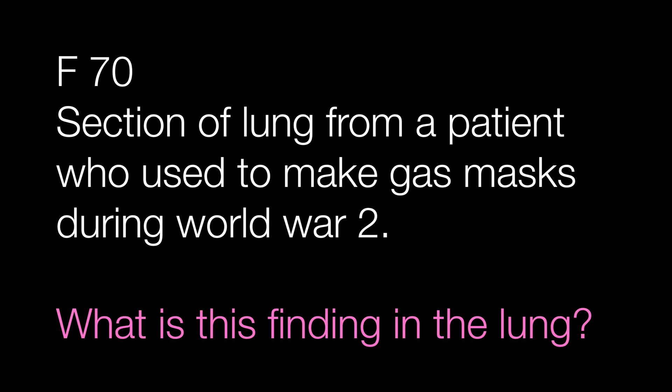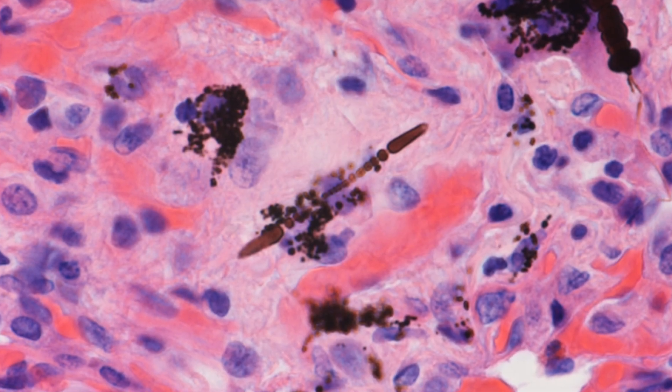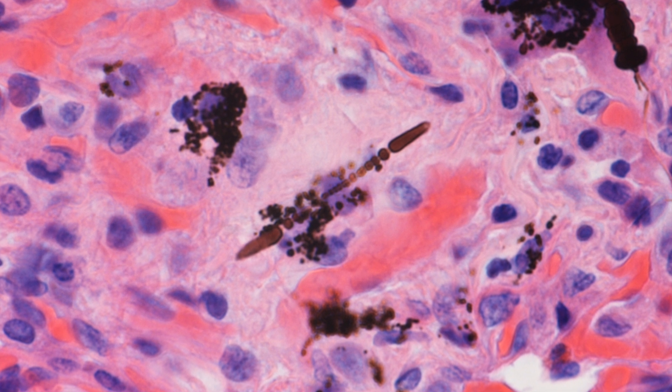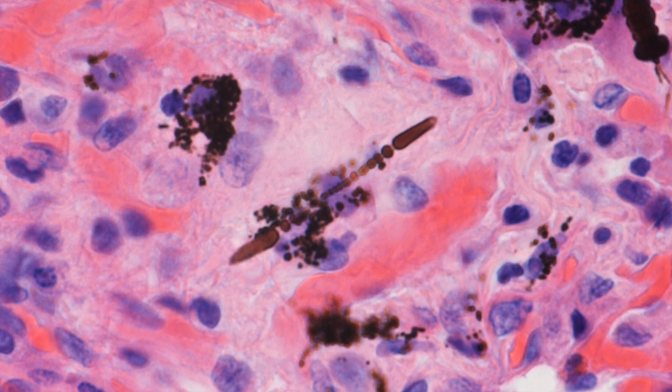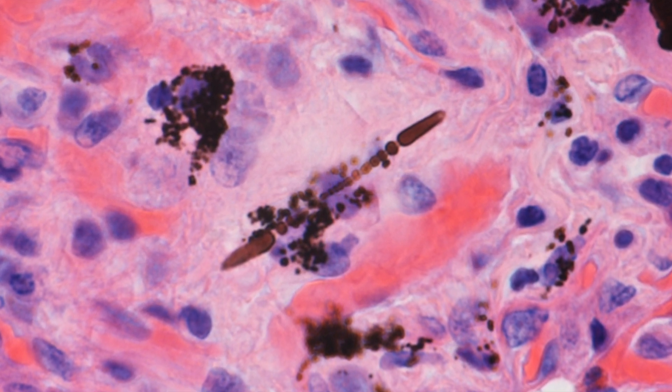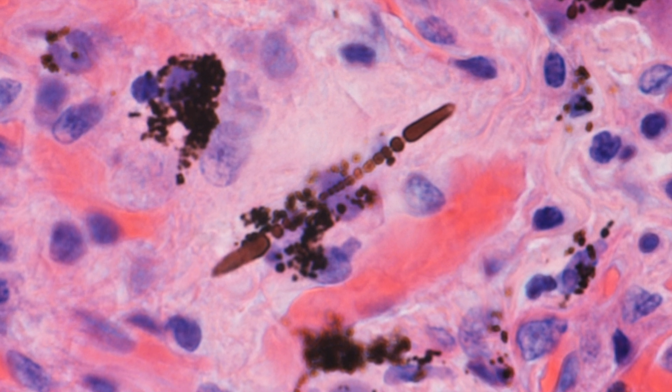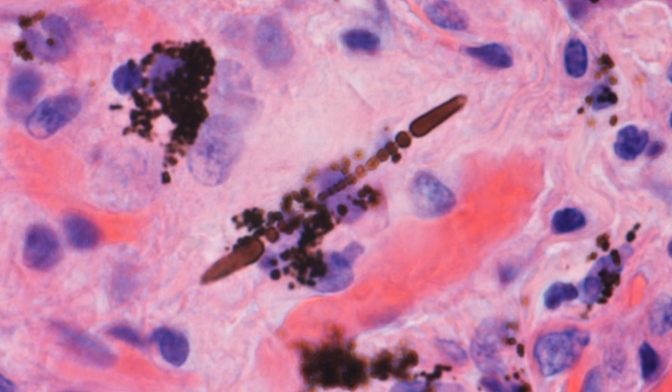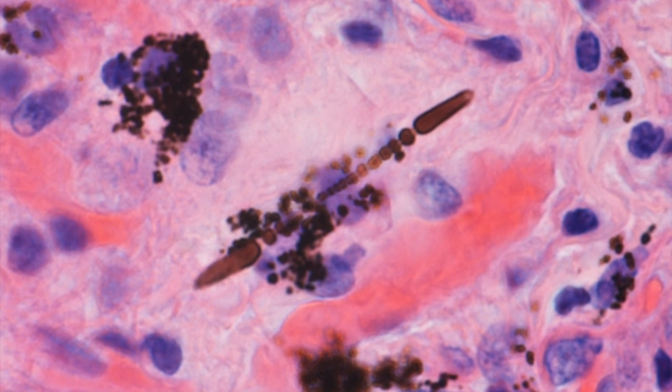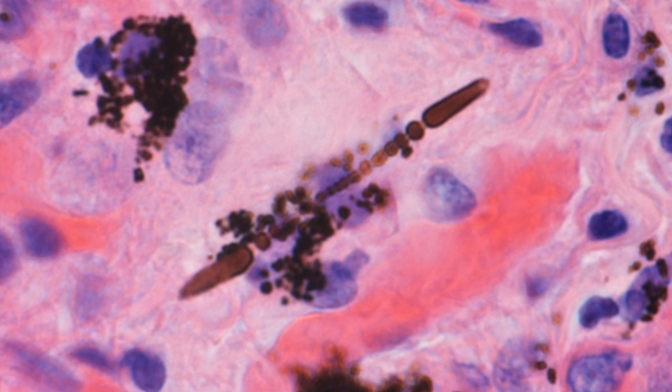This section of lung was taken from a patient who used to make gas masks during the Second World War. What is the finding in the lung? We are zooming into a rod shaped structure with a beaded appearance. What is it? And what has caused it?